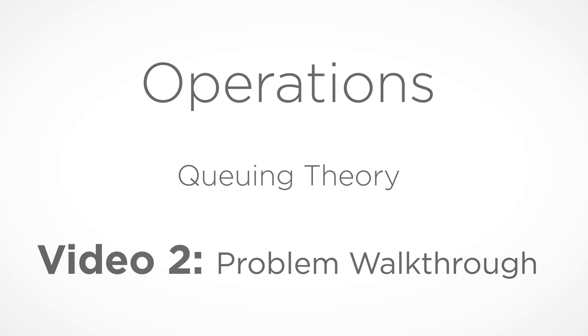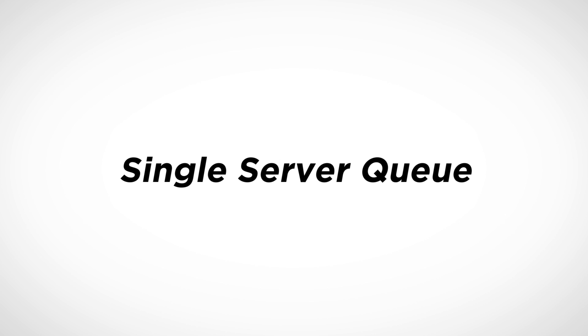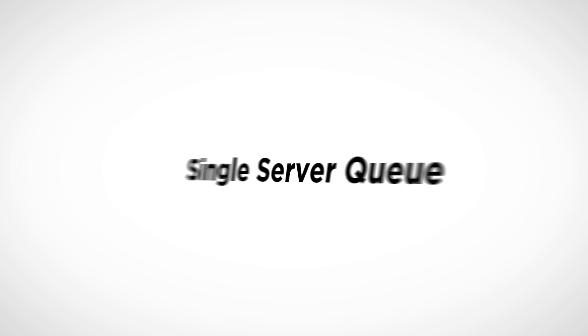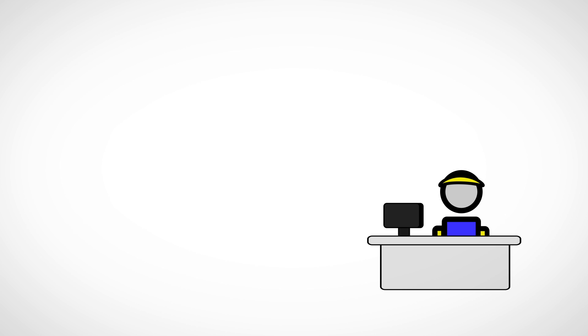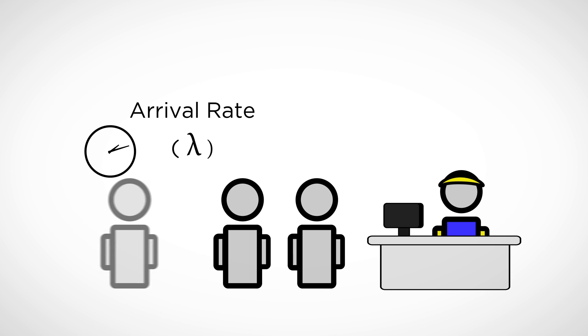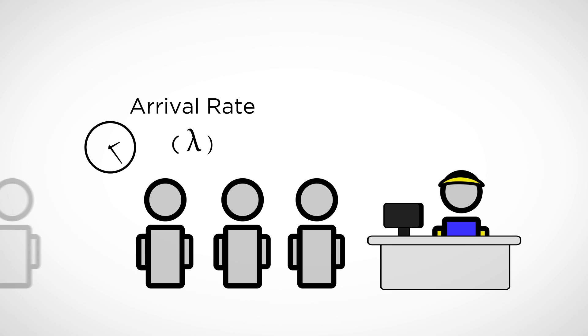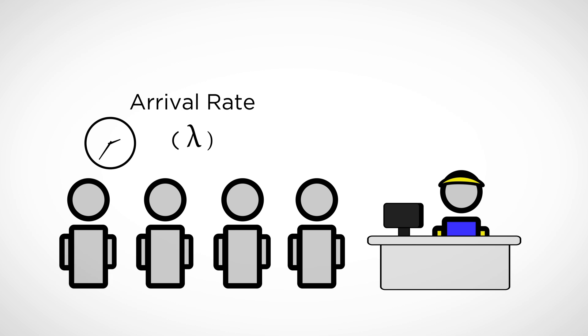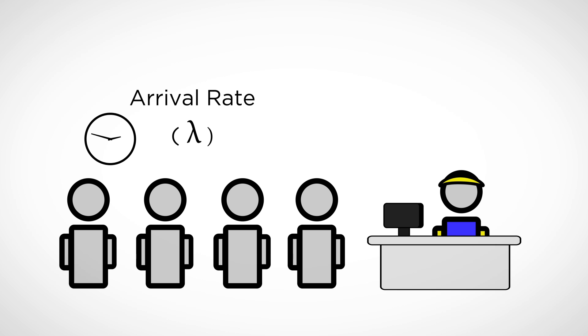In order to begin making the calculations, we first need to introduce what we refer to as the single server queue. The single server queue operates in the following way. Suppose that we have a single cashier and a single line. The first quantity which we need to define is the arrival rate of customers to the cashier. We denote this quantity by the Greek letter lambda.